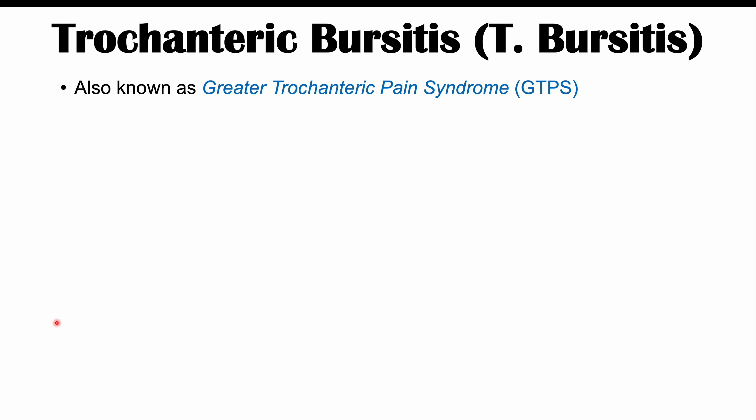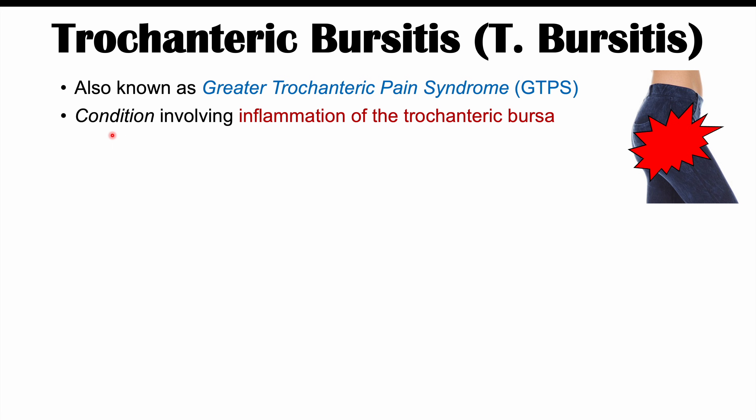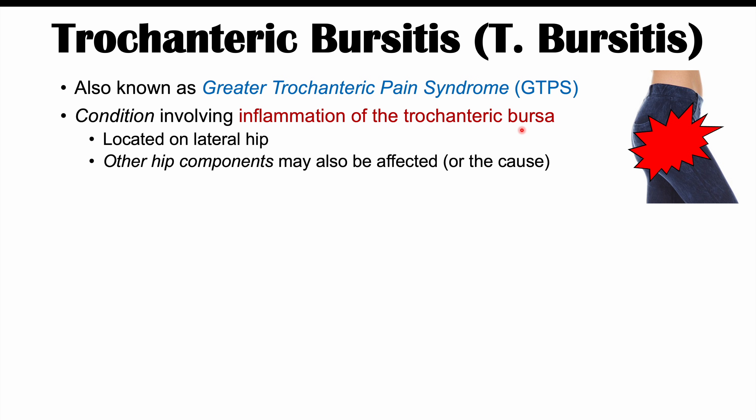Trochanteric bursitis is also known as greater trochanteric pain syndrome. It is a condition involving inflammation of the trochanteric bursa. The trochanteric bursa is located on the lateral hip, and although it is known as trochanteric bursitis or greater trochanteric pain syndrome, it may not only be the trochanteric bursa that is affected — other components of the hip may also be involved.